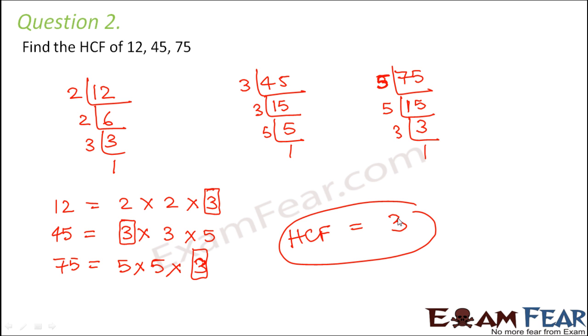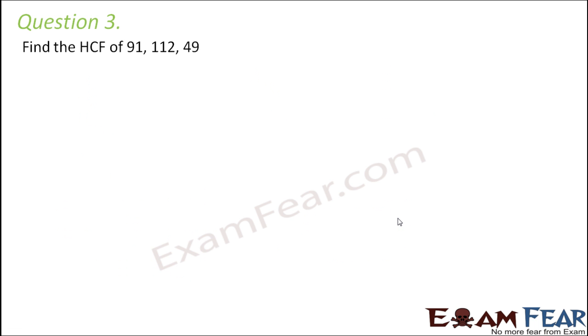If you want to verify the HCF using the alternative method — that is using factors — you can do that and you will arrive at the same result. Question number 3: Find the HCF of 91, 112, and 49.